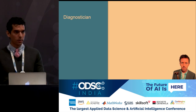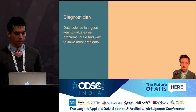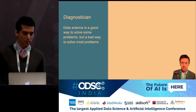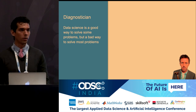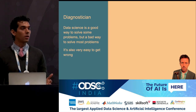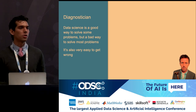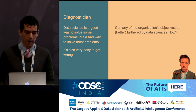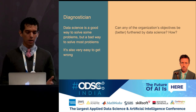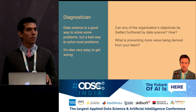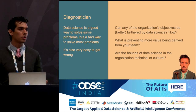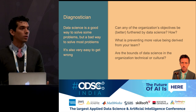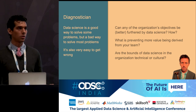The second hat you wear as a data science leader is that of diagnostician. I start with the premise that data science is a really good way to solve some problems, but it's actually a terrible way to solve most problems. You need to figure out which among the problems an organization faces are ones data science is well suited to address in your particular company. The questions you're asking yourself are: can any of the organization's objectives be furthered by data science? What is currently preventing your team from delivering more value? And what are the bounds of data science in the organization — whether they're technical, such as missing data pipelines, or cultural, where the organization doesn't fully recognize the value data science could provide.